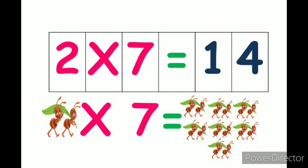2 sevens are 14. How many groups they are making? 7 groups. So how many total ants are there now? 14. 2 sevens are 14.